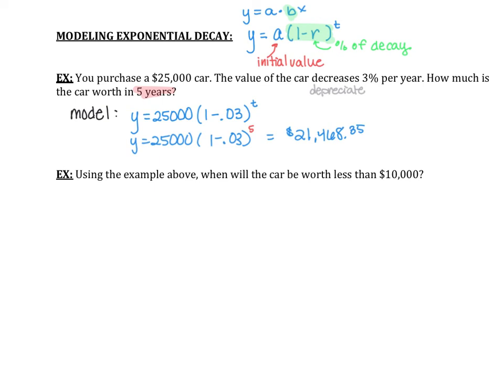Truthfully, most cars' depreciation rates are far higher than 3% — you couldn't sell a car five years later at $21,000. Let's look at another example using the same $25,000 car that depreciates at 3% per year: when will the car be worth less than $10,000? This time I'm asking for a when. I know the amount it depreciates to, so I'm trying to figure out when 10,000 = 25,000·(1 − 0.03)^t.